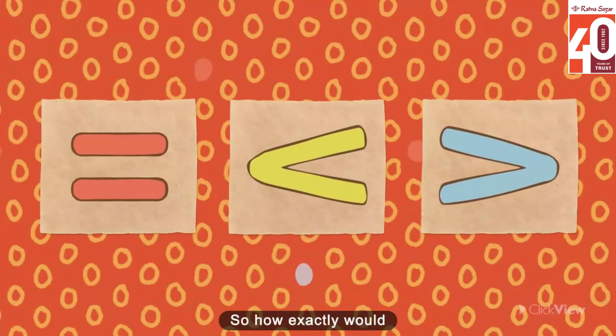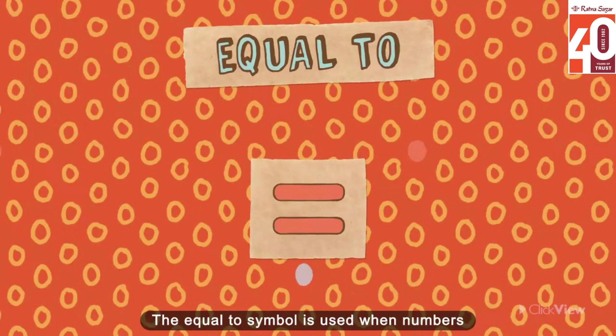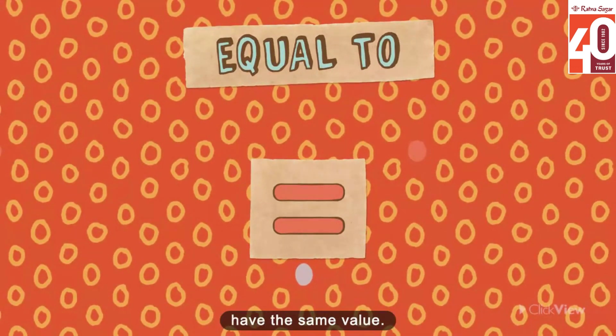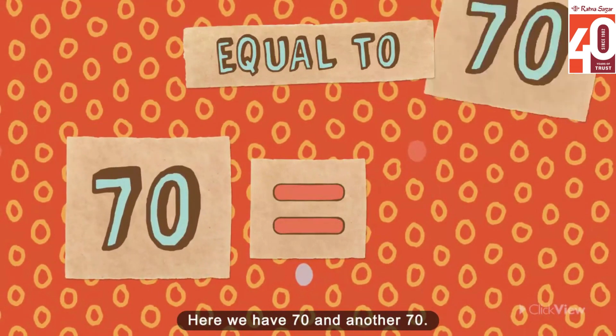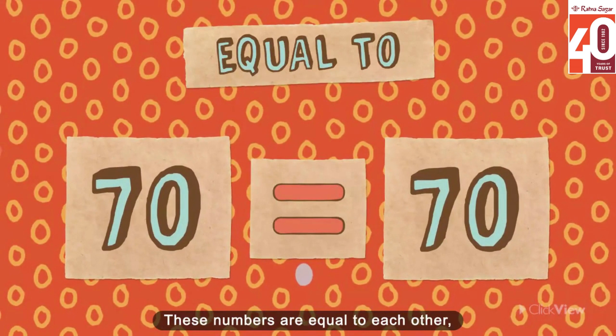So how exactly would you use these symbols? The equal to symbol is used when numbers have the same value. Here we have 70 and another 70. These numbers are equal to each other, so you would use the equal to symbol.